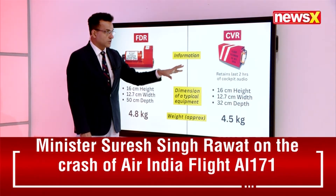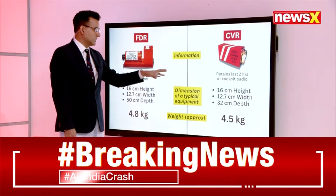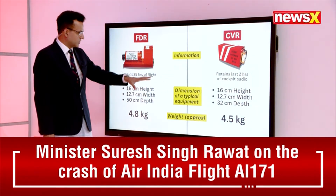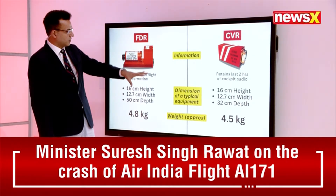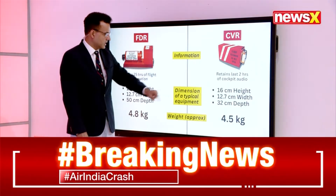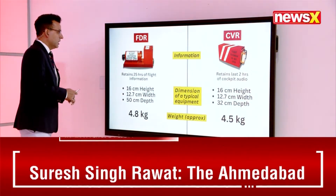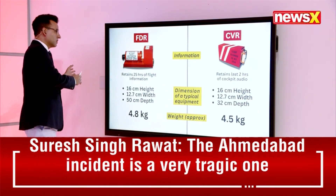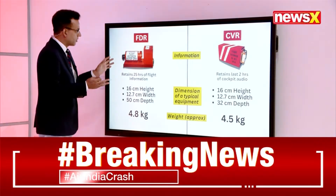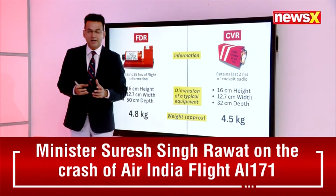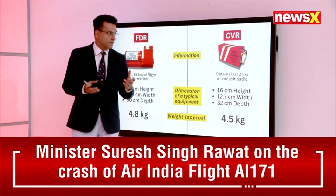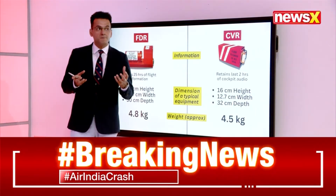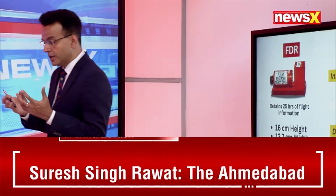The CVR — the cockpit voice recorder — is a little different. It retains the last two hours of cockpit audio and is only used in the event of a crash. Its dimensions are 16 centimeters in height and 12.7 centimeters in width, with a smaller depth of 32 centimeters, and it weighs around 4.5 kg. Both boxes — the flight data recorder and the cockpit voice recorder — are definitely important.